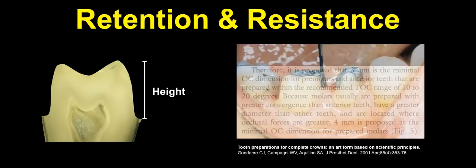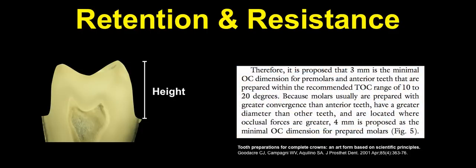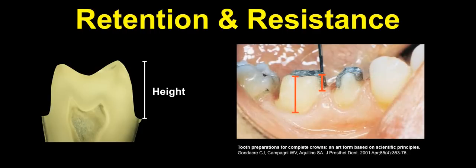As far as the height of our preparation goes, research shows the minimum height available is 3 mm for premolars and anterior teeth, and 4 mm for molars. Sometimes in the buccal and lingual aspect, we have more available tooth structure, and that helps us. It's very important that we have tooth structure buccally and lingually. Mesodistally, if we don't have enough, this can be compensated by the adjacent tooth structure so the tooth cannot move easily mesially and distally. Let's keep in mind we have 3 to 4 mm of minimum height for anterior and posterior teeth.